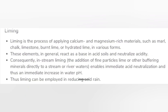Liming is the process of applying calcium and magnesium-rich materials, such as marl, chalk, limestone, burnt lime, or hydrated lime, in various forms. These elements, in general, react as a base in acid soils and neutralize acidity. Consequently, in stream liming, the addition of fine particles of lime or other buffering minerals directly to stream or river waters enables immediate acid neutralization and thus an immediate increase in water pH. Thus liming can be employed in reducing acid rain.